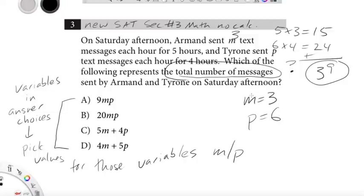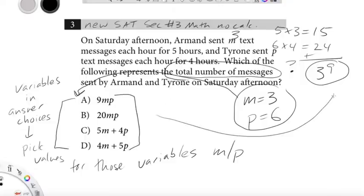So when we take M equals 3 and P equals 6 and we put them into the answer choices, only one of them is going to spit out the answer 39. So M equals 3, P equals 6, we could think of this as our input, and 39 we can think of as our output. So if we put in 3 and 6, do we get out 39?